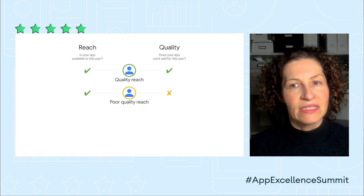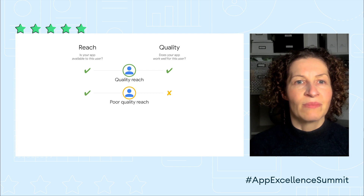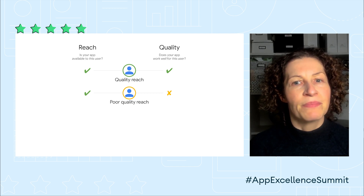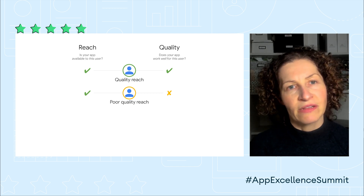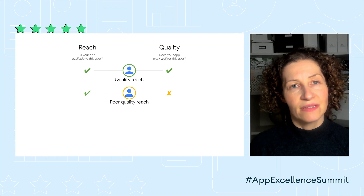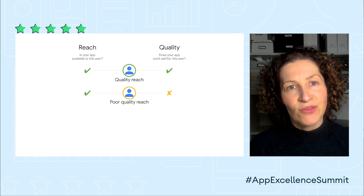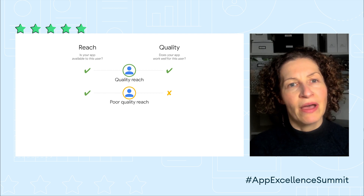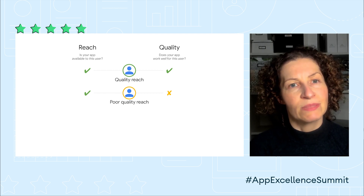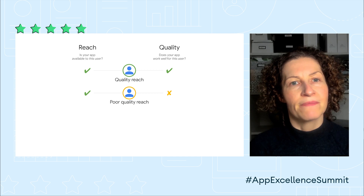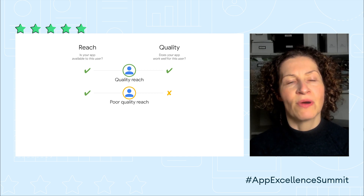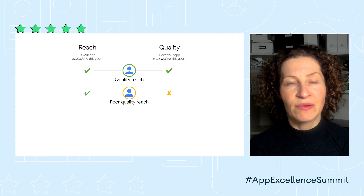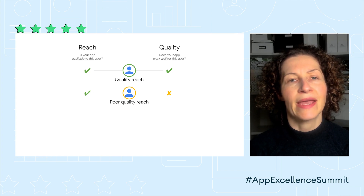But there's another consequence. Your discoverability and conversion on Play can be affected by both your Android vitals metrics and your ratings. So if you have a lot of users with poor quality reach, this could hurt your ability to acquire new users, even those who would have had a good experience. This is why reach and quality are so foundational to your success on Google Play.